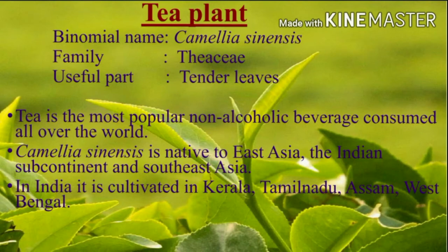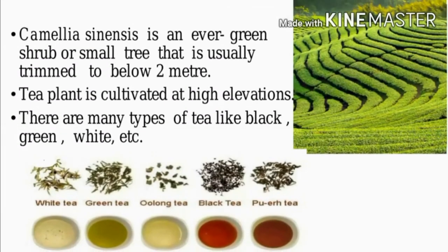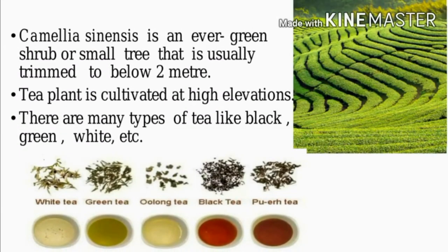The binomial name of tea is Camellia sinensis, family Theaceae. Tea is cultivated in the Indian subcontinent — India, Kerala, Tamil Nadu, Assam, West Bengal. Camellia sinensis is an evergreen shrub or small tree that is usually trimmed below two meters.